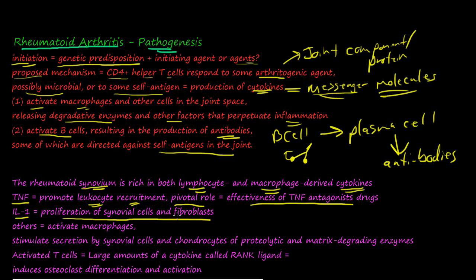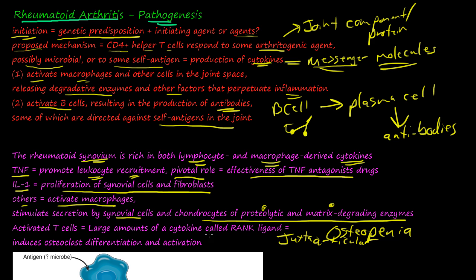Other cytokines activate macrophages and stimulate secretion by synovial cells and chondrocytes of proteolytic and matrix-degrading enzymes, which then causes the osteopenia or the juxtaarticular osteopenia. This is thought to be because of these proteolytic and matrix-degrading enzymes.